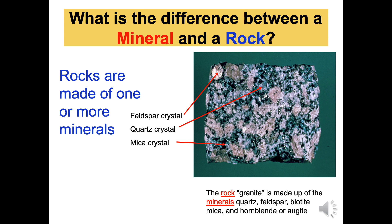So, what is a mineral? A mineral is a naturally occurring combination of elements that has a definite crystalline structure and a definite chemical composition. Naturally occurring means that no man-made substances qualify as minerals. This photo shows the rock granite is made up of the minerals quartz, feldspar, biotite mica, and hornblende or augite. It has been said that if you can't grow it, like a plant or an animal, or produce it as a fluid, like oil, gas, or water, then it started out as a mineral.